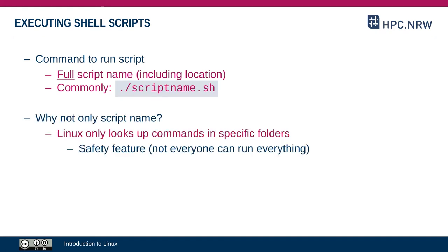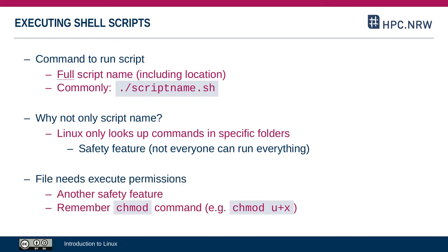The reason you have to put the path in front of the script name is Linux won't just let you execute anything — that's a safety feature. If you type in a command, Linux will look in a list of folders for a command with that exact name. If your script is not in one of these folders, you will have to specify the full path. Also, the file needs execute permissions. Remember that we already talked about how to set permissions for a file with chmod. You have to add the x permission before you can run it.